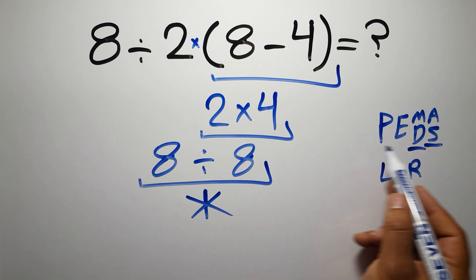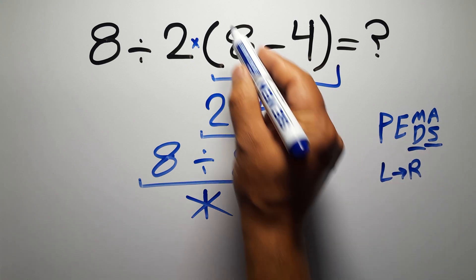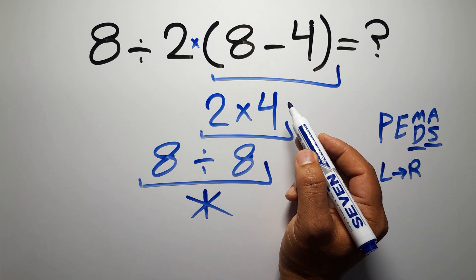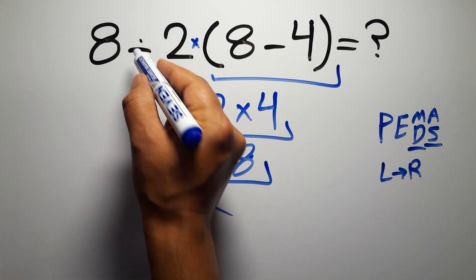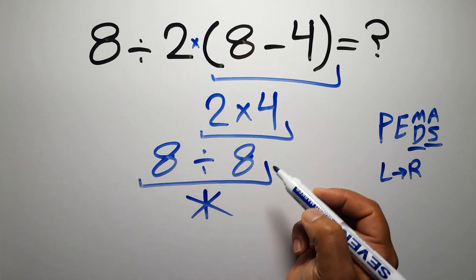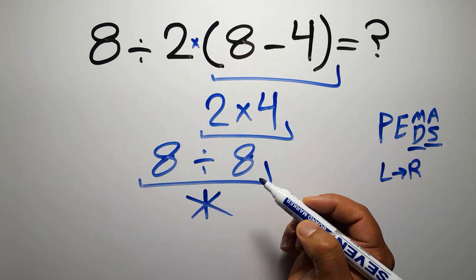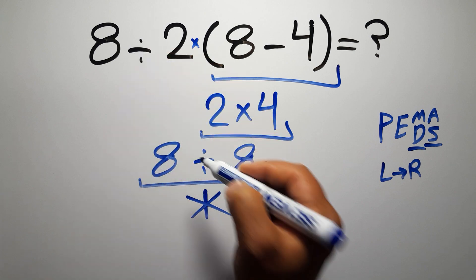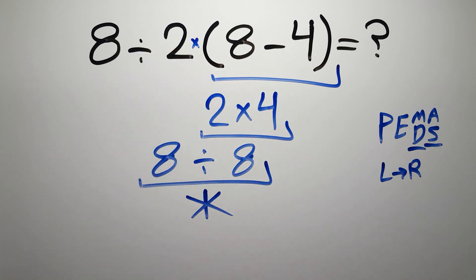So according to PEMDAS, first we have to do these parentheses, then this division, and finally this multiplication. If we do this multiplication before this division, it is wrong.